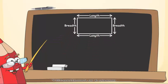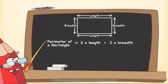Total length of boundary, that is perimeter of a rectangle, is two times length plus two times breadth. Or, we can write two times of length plus breadth.